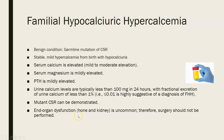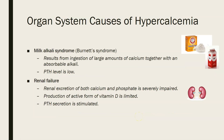End organ dysfunction in bone and kidneys is uncommon, so surgery is usually not performed. Regarding organ system causes of hypercalcemia: milk alkali syndrome, also known as Burnett syndrome, results from ingestion of large amounts of calcium together with an absorbable alkali — for example, milk and baking soda. A patient might do this for a peptic ulcer, as milk coats and soothes the burning and baking soda neutralizes acid. In milk alkali syndrome, the parathyroid hormone level is low because calcium is high.